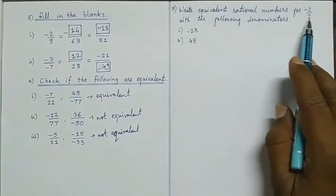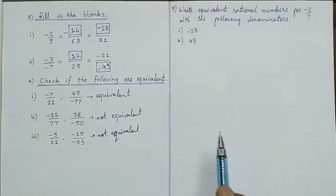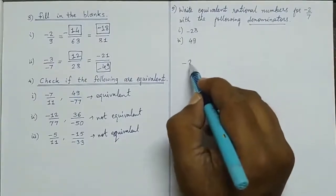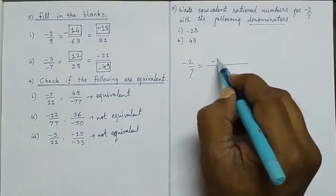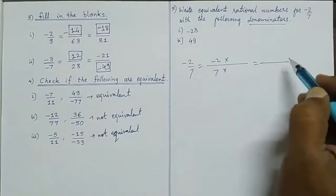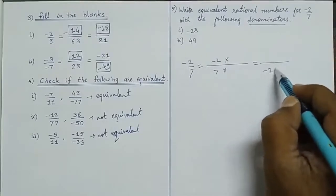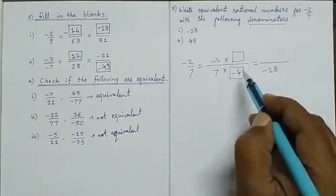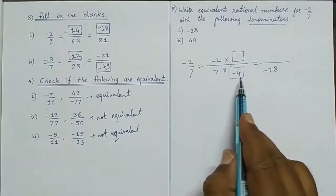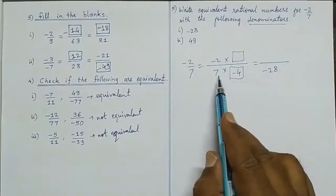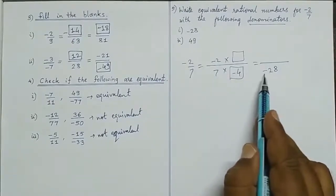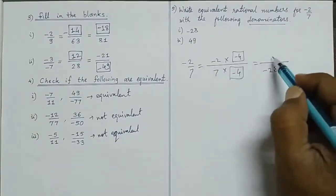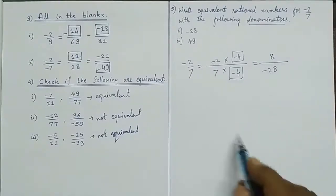Write equivalent rational numbers for minus 2 upon 7 with the following denominators. First, denominator needed is minus 28. We need to multiply 7 by minus 4 to get minus 28. Same minus 4 multiplied to numerator: minus into minus is plus, and 2 fours are 8. So the answer is plus 8 upon minus 28.